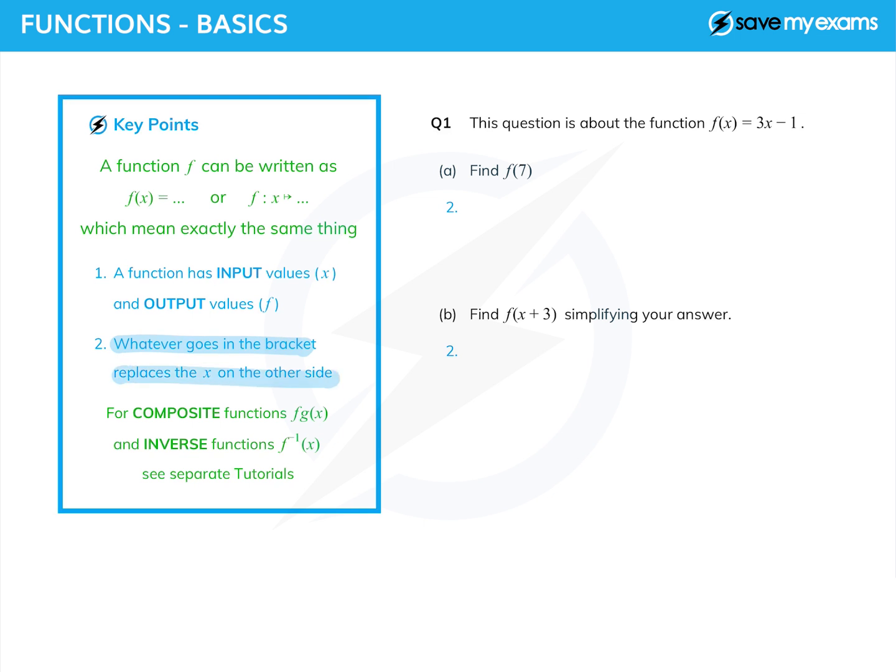Let's see what I mean by doing question one. So we can see that f(x) is 3x - 1, and so when we're asked to find f(7), well what do we do? We say f(7) is 3 × 7 - 1, because as I say, the 7 replaces the x, and then we just calculate what that is. 3 sevens are 21, minus 1 is 20.